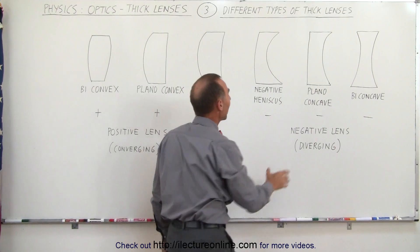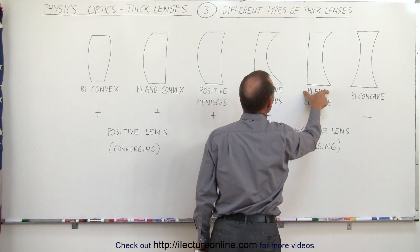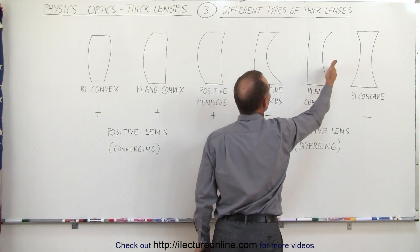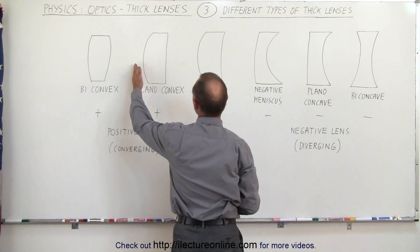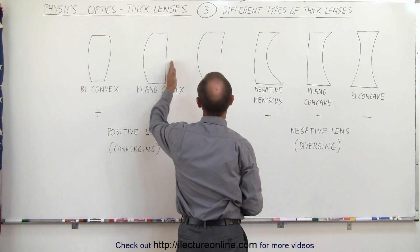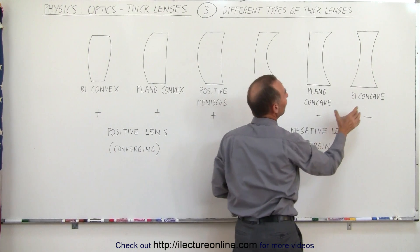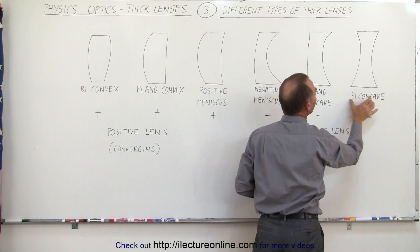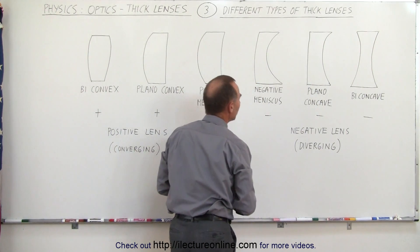Here again, we have one side that's flat, so we use the word plano, but the other side is concave, so we call this plano-concave instead of plano-convex. And finally, when both sides of the lens are concave, we call that biconcave instead of biconvex.